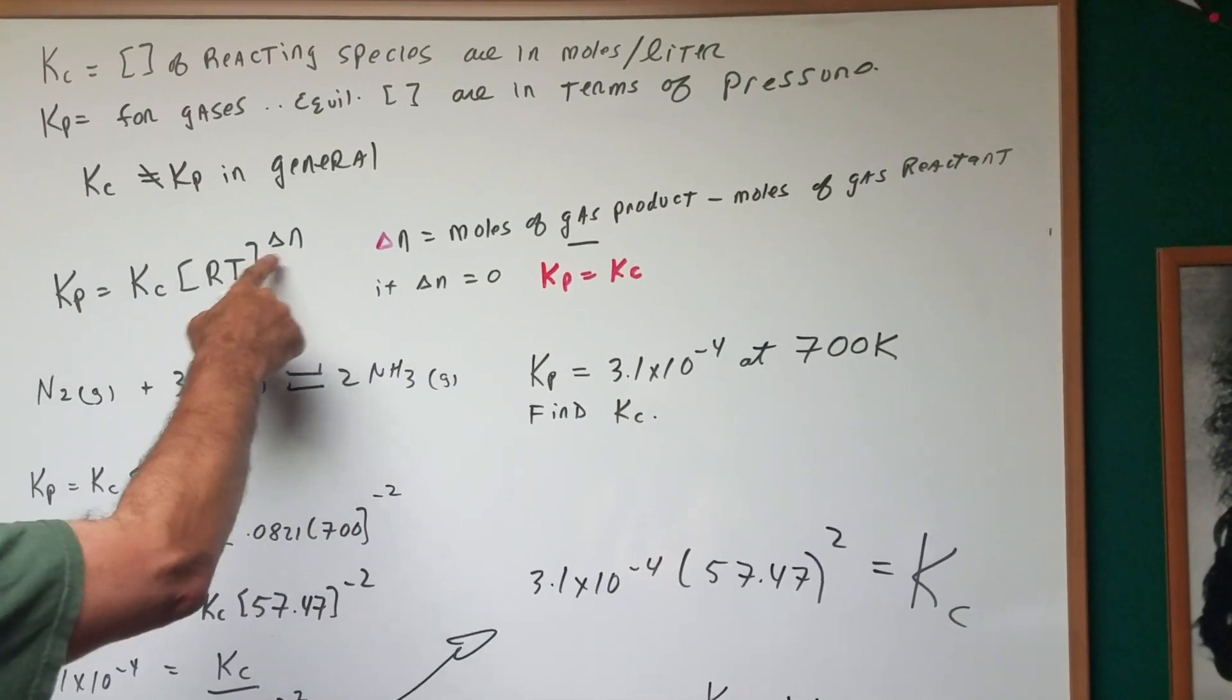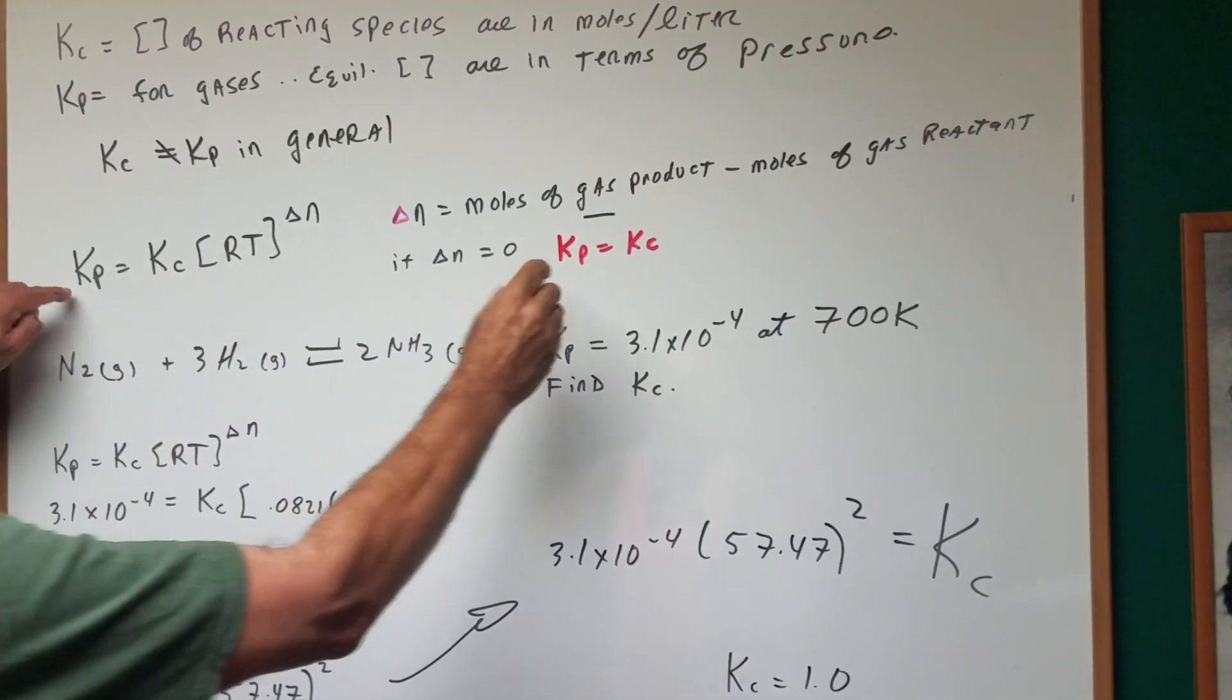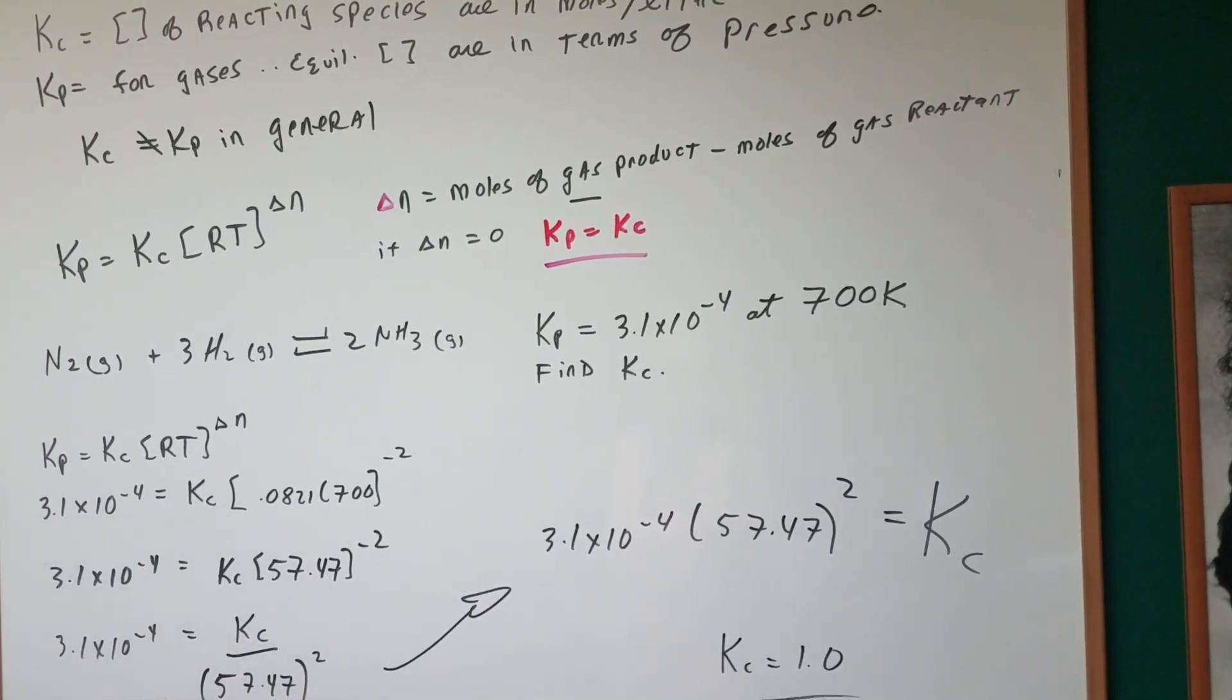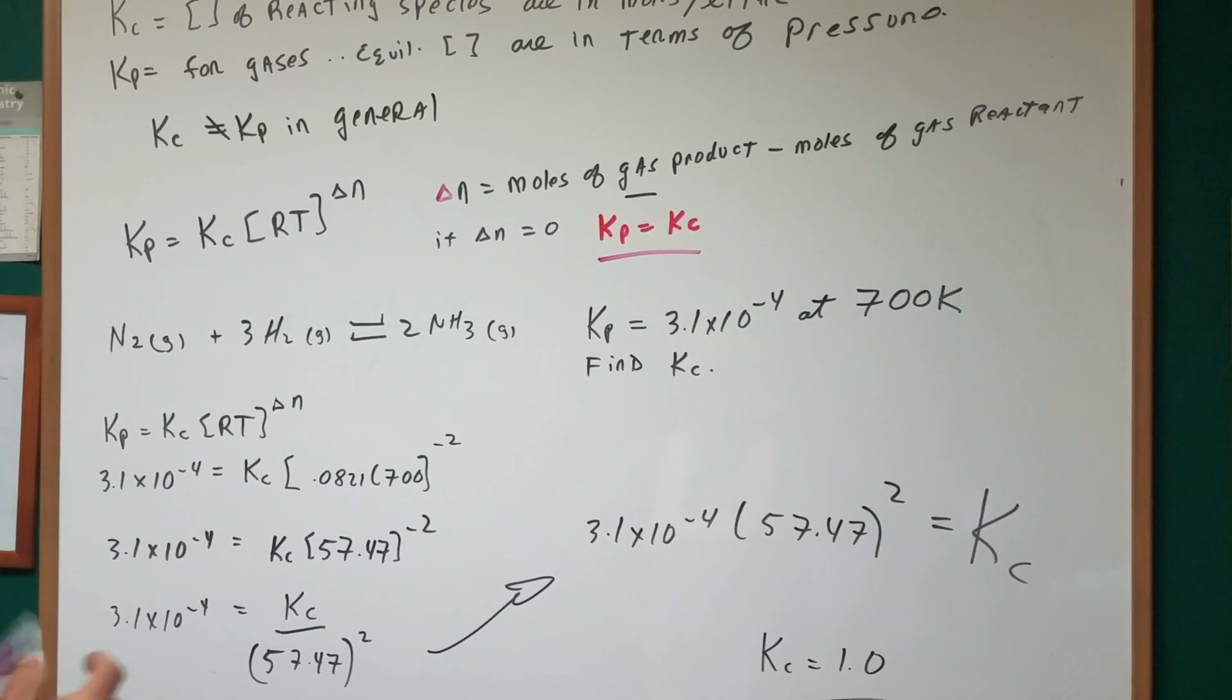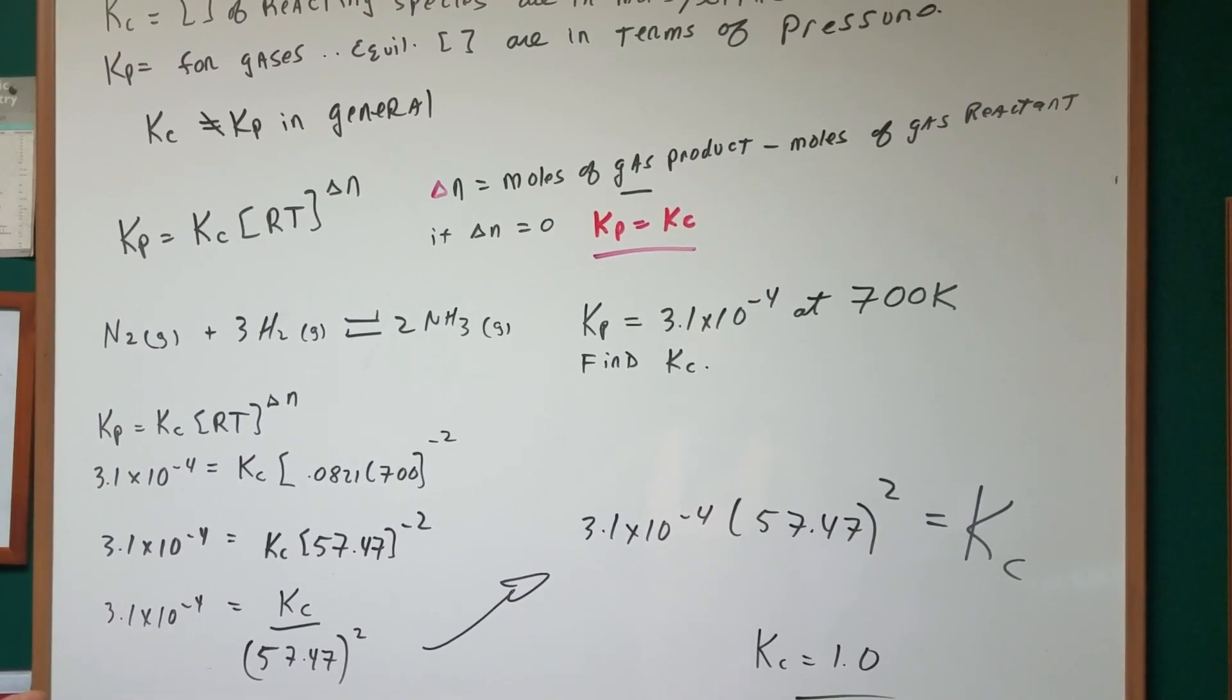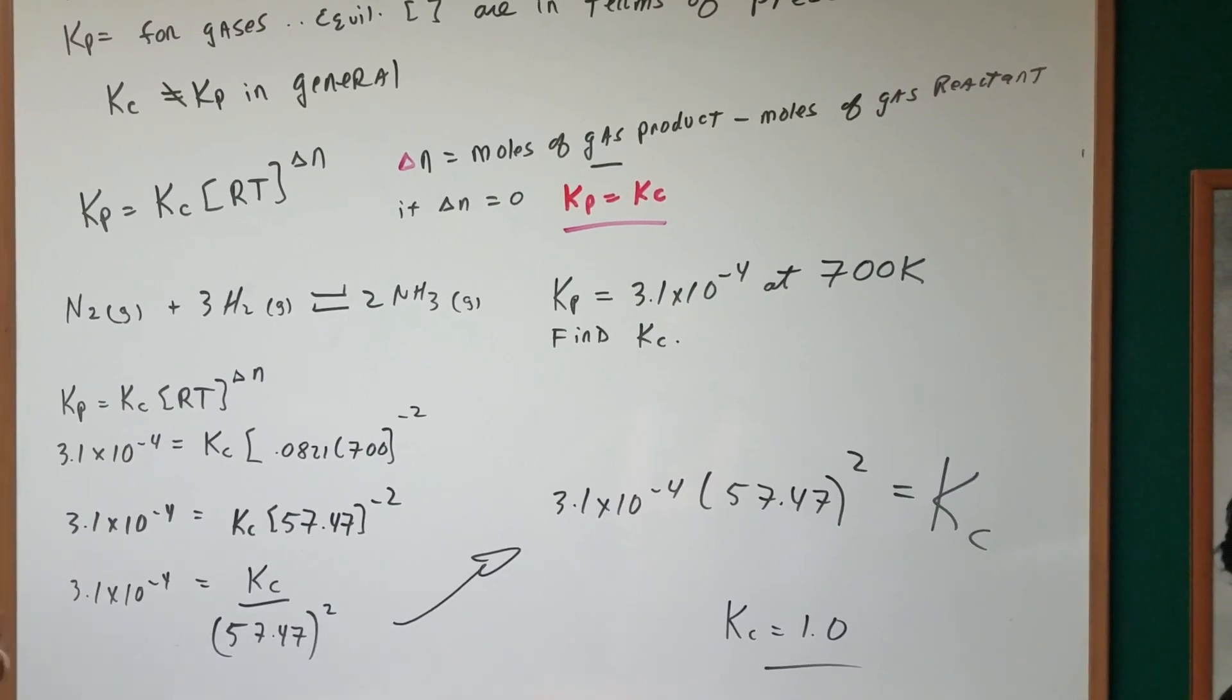Obviously, if the delta N is equal to zero, this term goes to zero, anything to the zero is one, and therefore the KP would equal the KC. Always a test question. So if I have asked you when does the KP equal to KC, when the moles of gas product equals the moles of gas reactant.